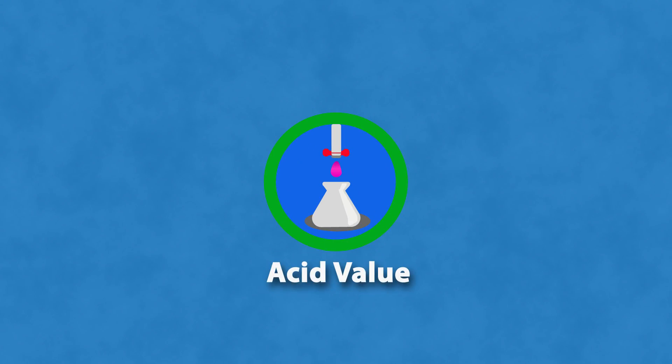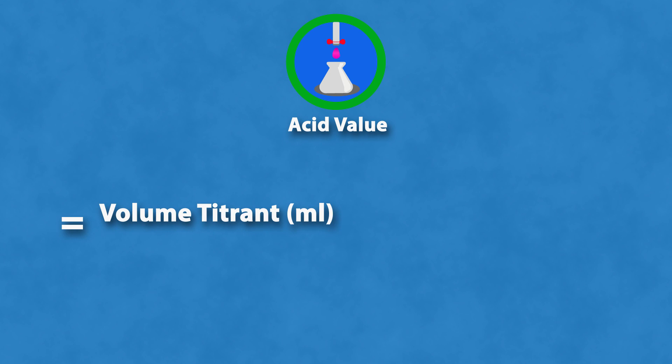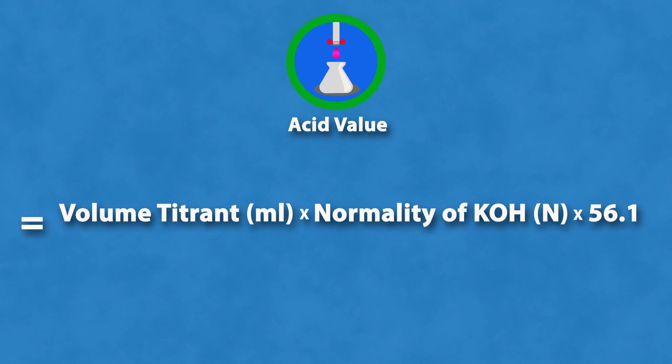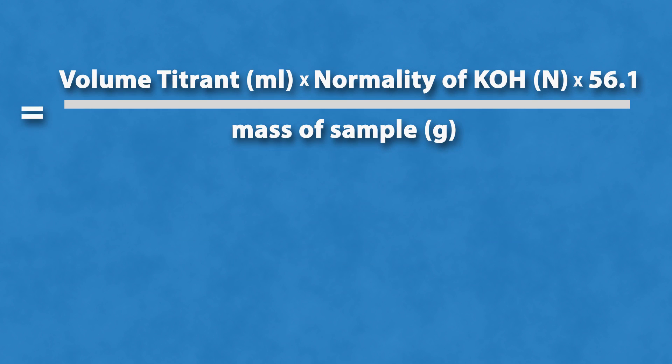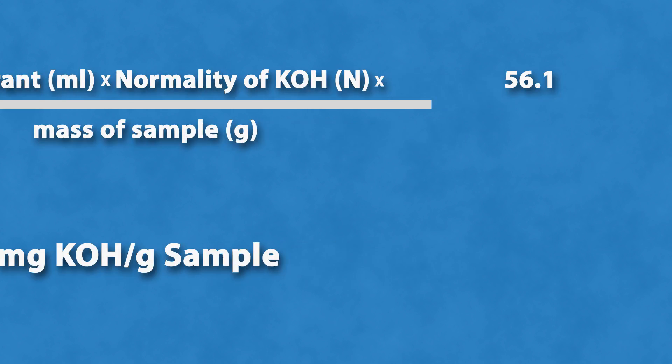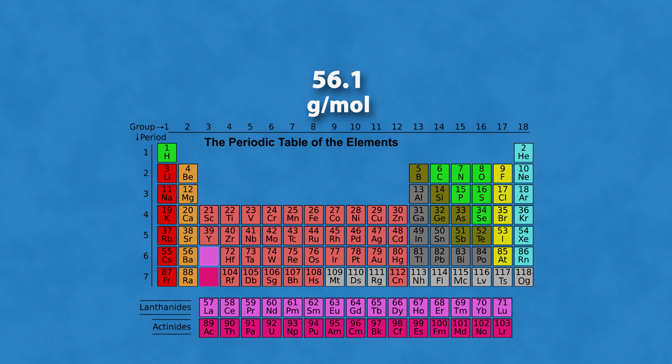In order to calculate the acid value, the following equation can be used: the acid value is equal to the volume of titrant used multiplied by the normality of the potassium hydroxide solution multiplied by 56.1, all divided by the mass of the sample. Again, the acid value is expressed as milligrams of potassium hydroxide per gram of sample. 56.1 is the molecular weight of potassium hydroxide.